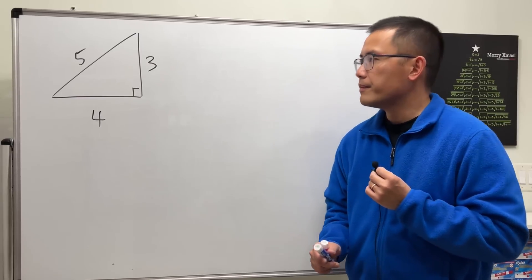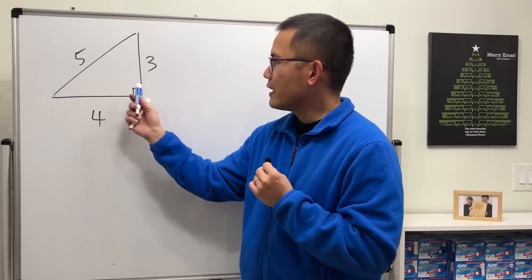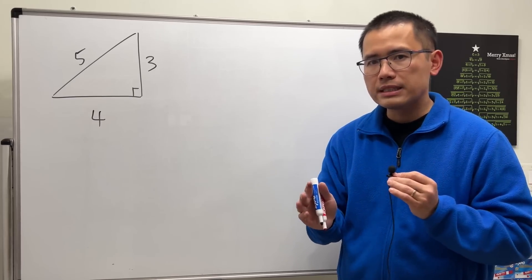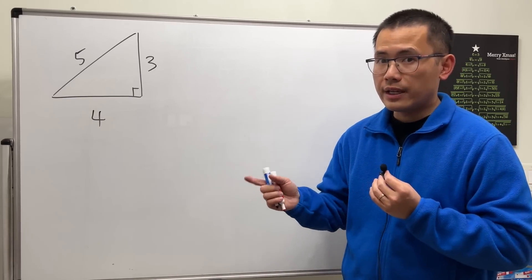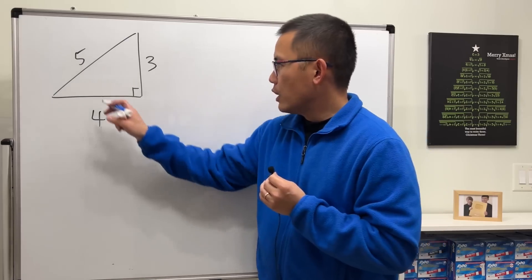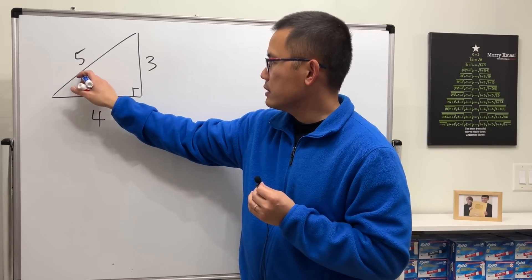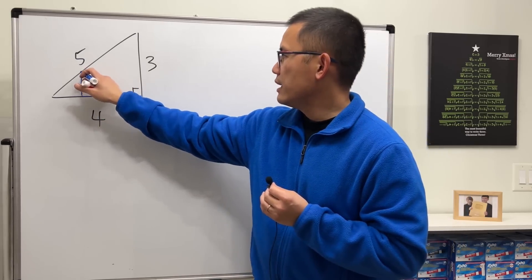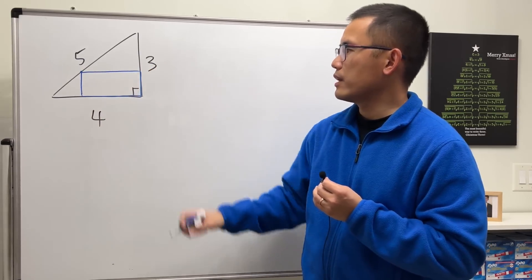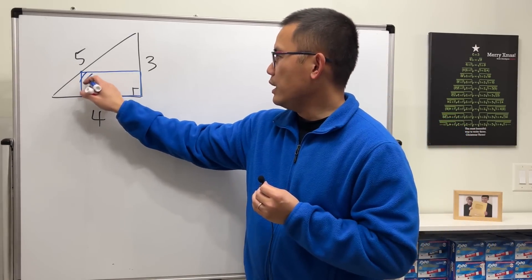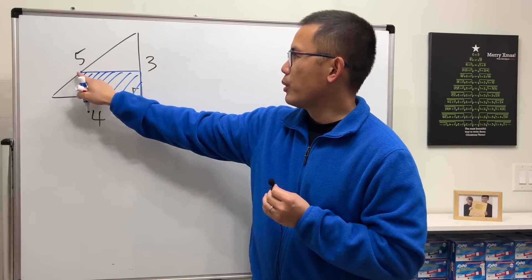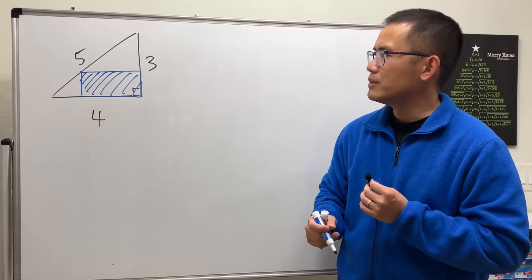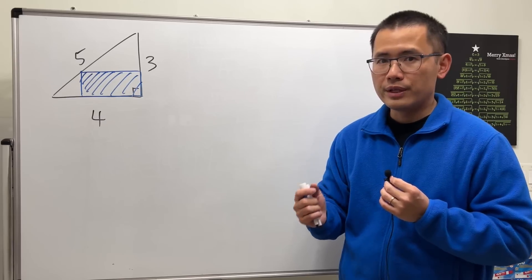Here's the question we are going to investigate today. We have a 3-4-5 right triangle, and we are going to put a rectangle inside. The question is: what's the biggest possible area of such a rectangle? One vertex of the rectangle has to be on the hypotenuse. If you put the point right here you draw one rectangle, and if you put it somewhere else you get a different area. We want to know what's the biggest possible area we can have.